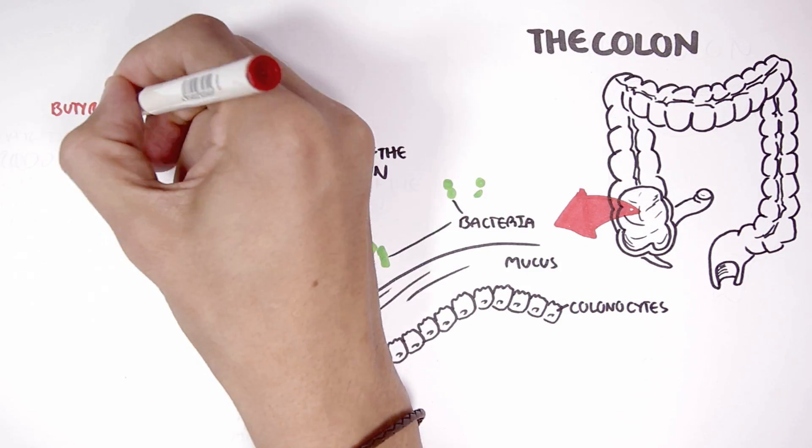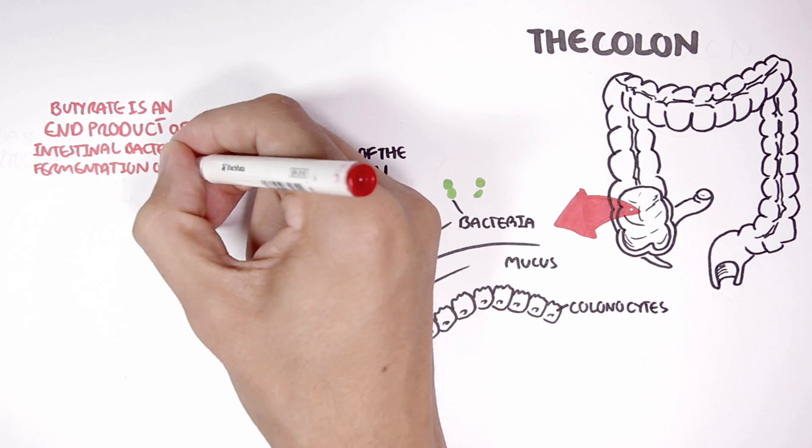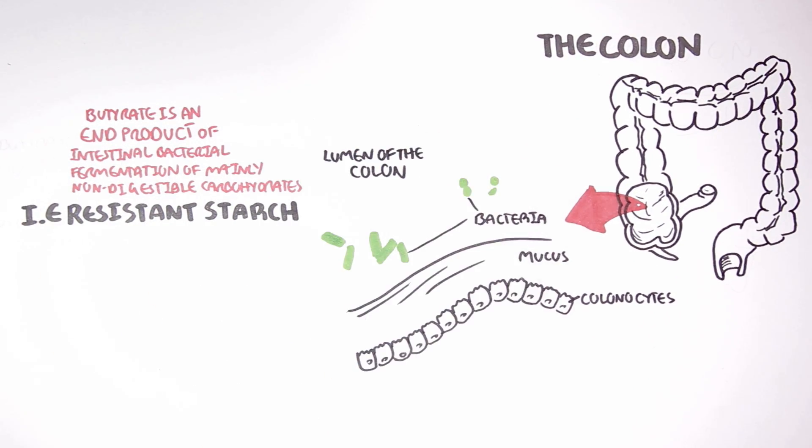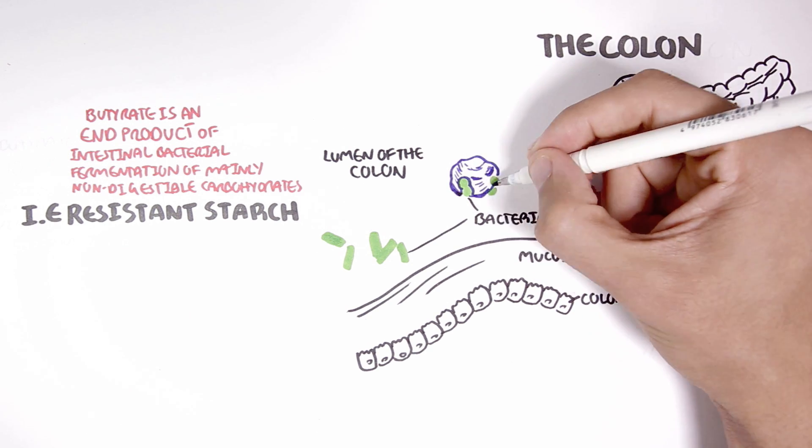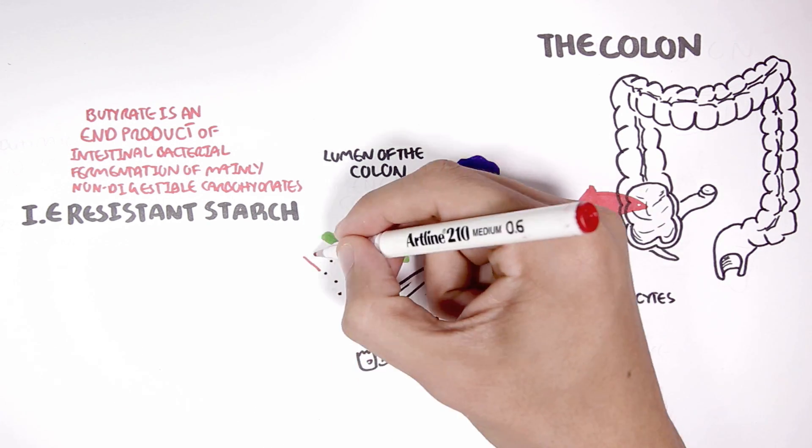Butyrate is an end product of intestinal bacterial fermentation of mainly non-digestible carbohydrates such as resistant starch. So here we have resistant starch which has reached the colon. Bacteria will ferment the resistant starch, and through cross-feeding with other bacteria, butyrate is produced.